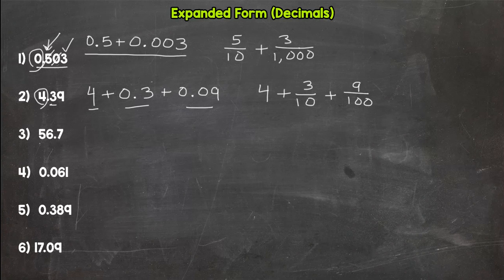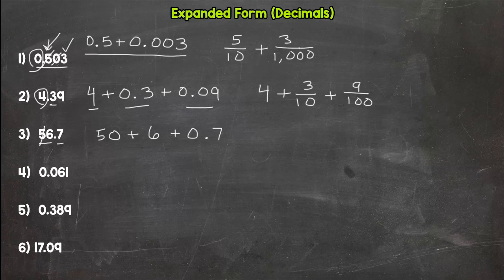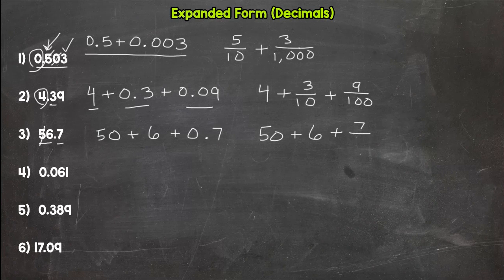Number three: fifty-six and seven tenths. That five is not worth five — it's worth fifty. Plus a six which has a value of six. Plus a seven which has a value of seven tenths. Fraction form: we don't need a fraction for the whole numbers — fifty plus six plus seven tenths. Done.